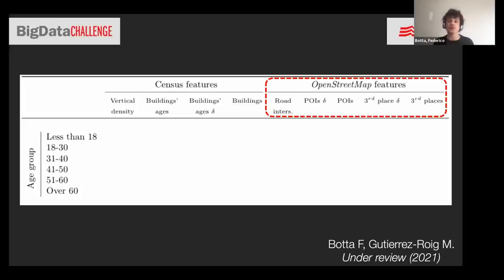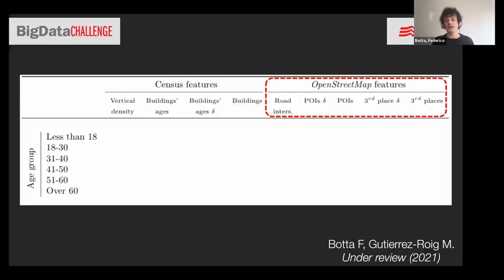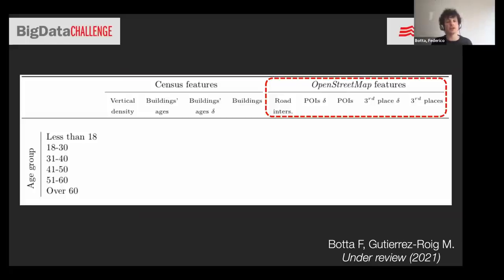We looked at features studied in the urban science literature: number of buildings, diversity of building ages — since older and newer buildings encourage different types of businesses — vertical density, and points of interest from OpenStreetMap such as cafes, museums, and monuments. We also looked at the concept of 'third places' from urban studies: the first place is home, second is work, and third places are where we gather for social time — commercial venues, organized activities, and so on.